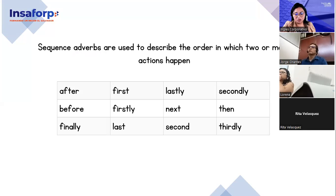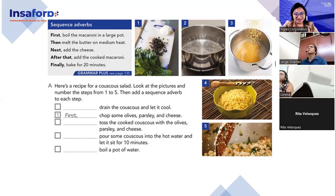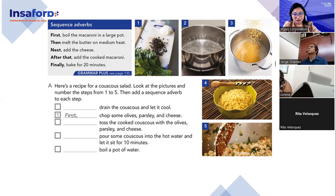So, what is your goal for today? Tenemos una recipe right now. Here is a recipe of couscous salad. ¿Saben qué es eso? Have you ever tried that one? Couscous salad. Look at the pictures. We have five different pictures. I want you to take a look at the pictures right now, and we are going to add the correct sequence adverbs.